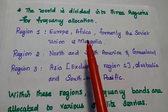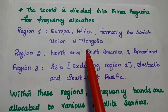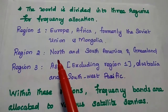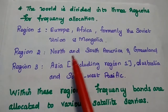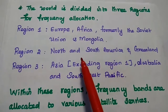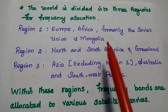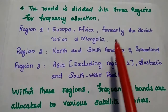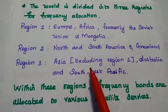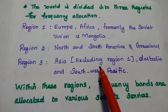Europe, Africa, formerly the Soviet Union and Mongolia are coming under Region 1. Northern and South America and Greenland are grouped as Region 2. Asia, excluding the Region 1 countries, Australia and the Southwest Pacific are grouped as Region 3.